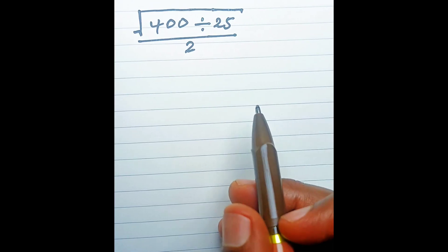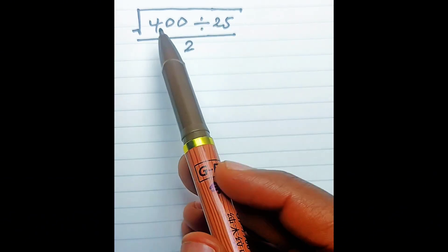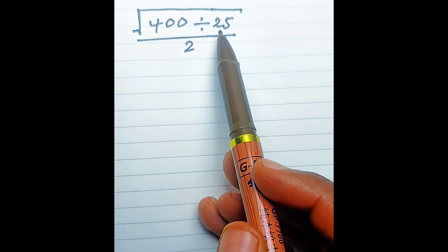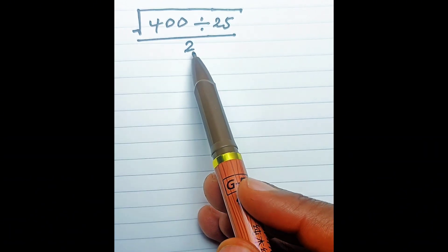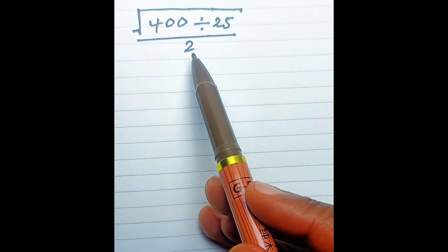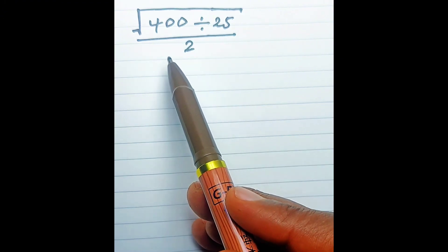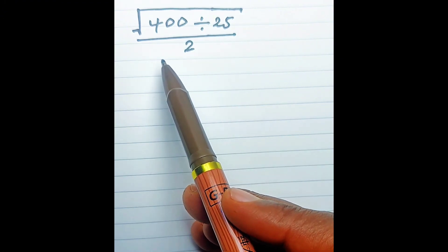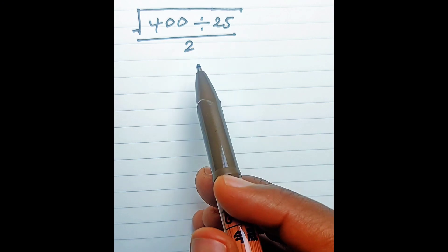Hello, welcome to my channel. We have this expression: square root of 400 divided by 25, over 2. We can solve this expression using the order of operations, so let's review the order of operations.